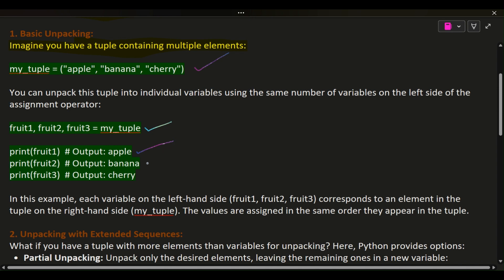print(fruit2) # Output: banana print(fruit3) # Output: cherry